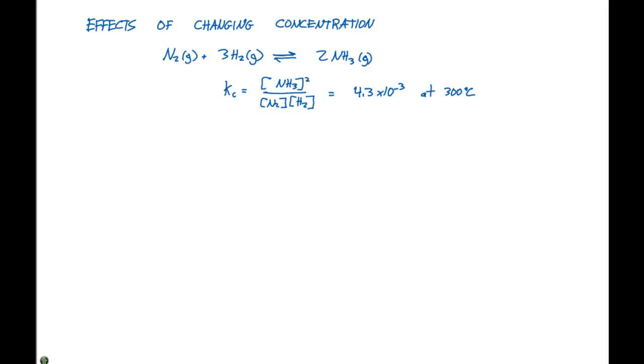Here we have the same equilibrium we discussed earlier, where we have nitrogen gas plus three hydrogen gas in equilibrium with two ammonia gas. The KC expression is 4.3 times 10 to the minus 3 at 300 degrees Celsius.